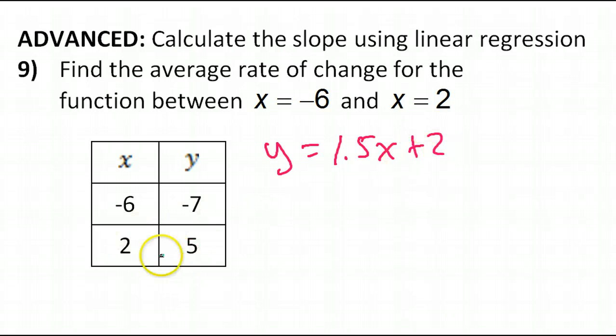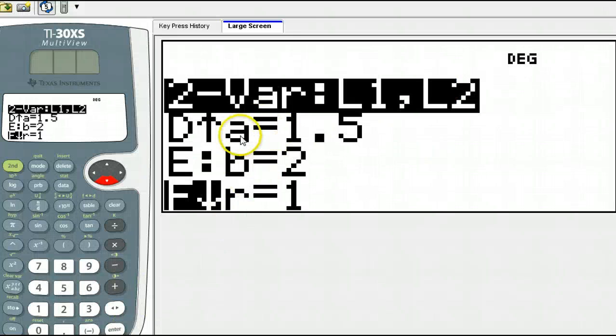That's the equation of the line through these two points. But the rate of change is just the slope. And we know that the slope is this, what we usually call M. But in your calculator, it's A.